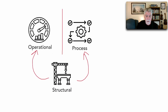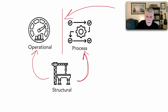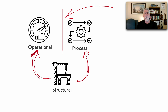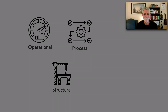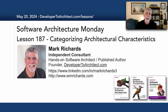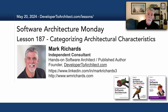It's interesting that there is a dividing line between operational and process characteristics, but structural characteristics can contribute to the success of both operational and process characteristics as well. So no categorization is perfect, but this is pretty close to really being able to grasp and get a good understanding of those architectural characteristics. This has been lesson 187, offering up categories of architectural characteristics to help us better choose which ones we might need for our particular system. Thank you so much for listening — stay tuned in two more Mondays for the next lesson in Software Architecture Monday.